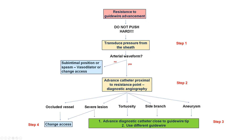What to do if there is resistance to guide wire advancement? The key concept is to never push hard — this is how complications happen. Instead, the emphasis should be on trying to understand what the problem is and solving it. The first step is transducing the pressure from the sheath to ensure there is an arterial waveform, because sometimes the sheath may be placed in the subintimal space, or in radial axis there may be some spasm.